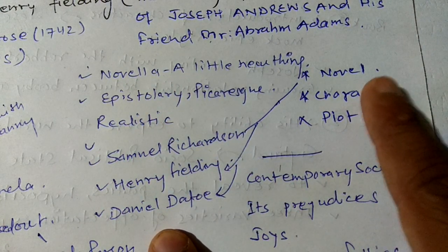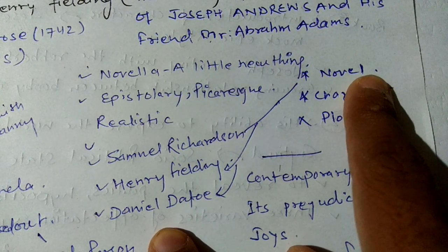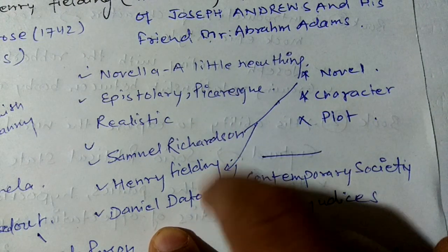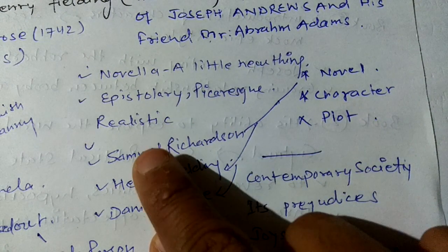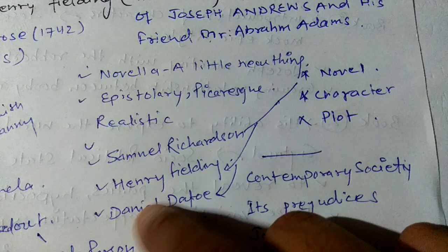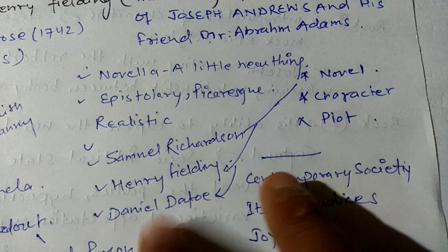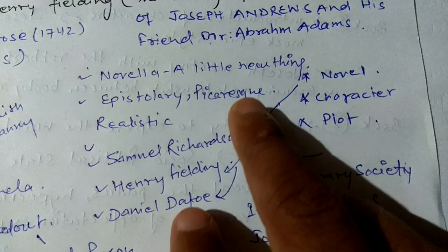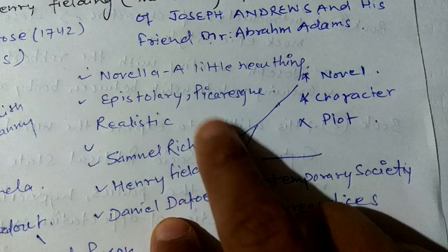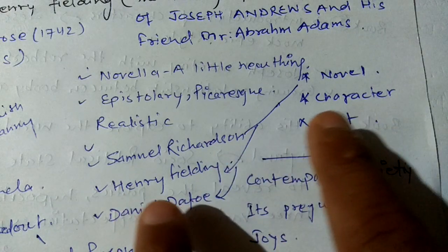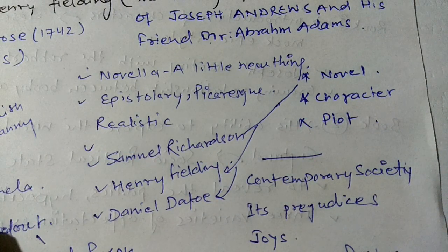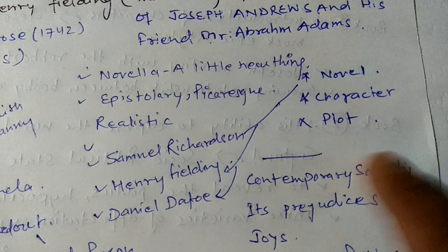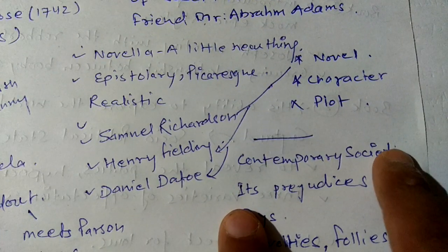Novella — this is asked in several exams. Novella means 'a little new thing.' This is one of the earliest novels. We can associate these words with Samuel Richardson, Henry Fielding, and Daniel Defoe — these are the earliest novel writers. Kinds of novels include epistolary, picaresque, and realistic novel.